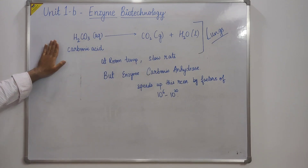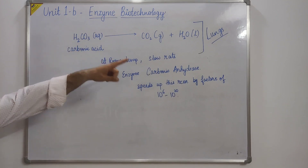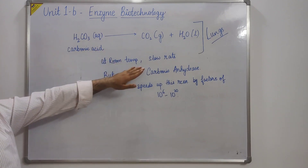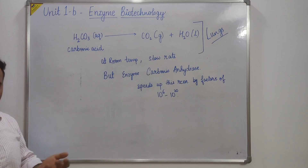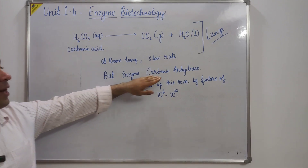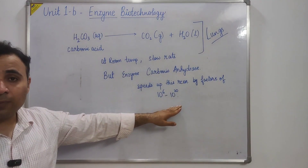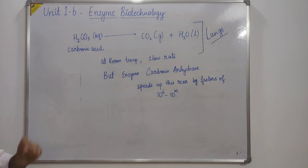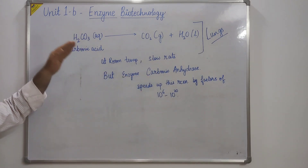Let's take an example. In our lungs, carbonic acid converts to CO₂ and H₂O. At room temperature this reaction occurs at a very slow rate. To increase the rate we would need to increase the temperature, but the human body cannot go beyond 37 degrees. So to speed up this reaction we have an enzyme — carbonic anhydrase — which speeds up this reaction by a factor of 10⁶ to 10²⁰, because CO₂ must be produced from our body at a much higher rate.